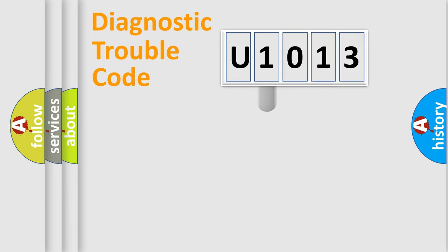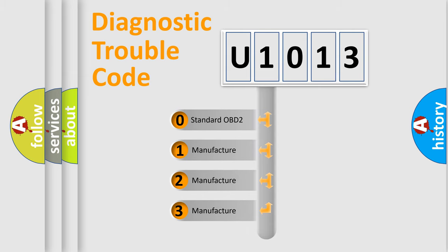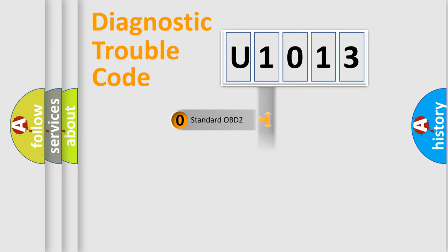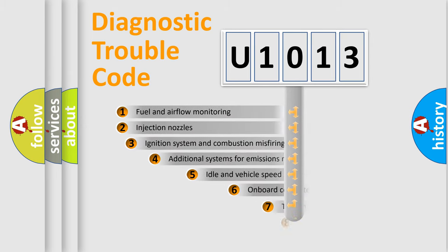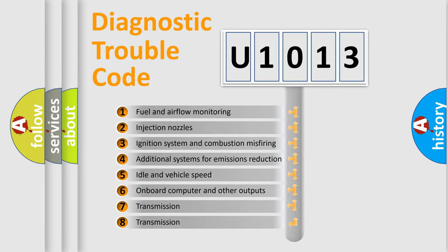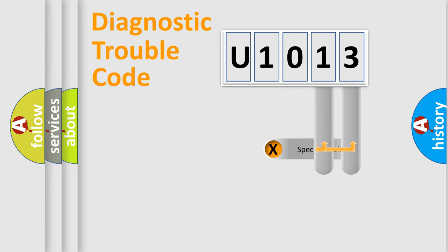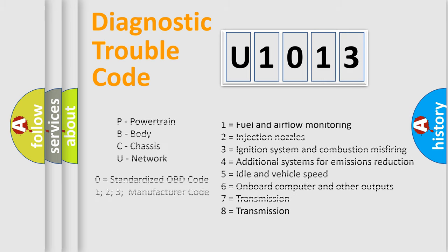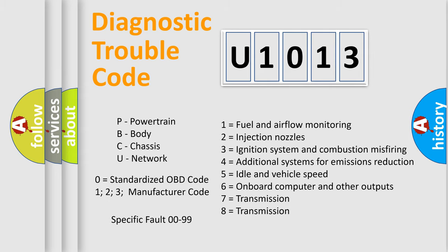This distribution is defined in the first character of the code. If the second character is expressed as zero, it is a standardized error. In the case of numbers 1, 2, or 3, it is a manufacturer-specific error. The third character specifies a subset of errors. This distribution is valid only for the standardized DTC code, and only the last two characters define the specific fault of the group.